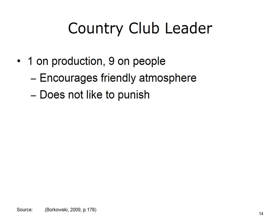The country club leader is represented by a 1 on production and a 9 on people. A country club leader scores very low on task but very high on relationships. This type of leader is concerned with ensuring that employees' needs are met and that the work environment is comfortable and friendly. Since the focus is centered on people rather than on productivity, this type of leader often falls short in achieving production goals.